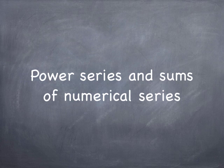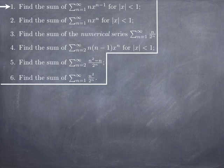Now we're going to take a look at how we can use power series to find exact sums for numerical series. We're going to go through this exercise where there are six questions, starting with this first question where we want to find the sum of the series from 1 to infinity of n multiplied by x to the n minus 1, for x between negative 1 and 1.